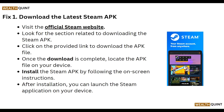First of all, download the latest Steam APK. Visit the official Steam website and look for the section related to downloading the Steam APK. Click on the provided link to download the APK file. Once the download is completed, locate the APK file on your device.